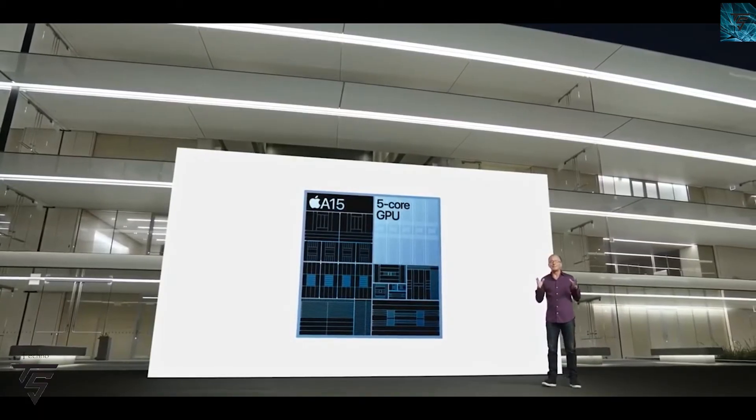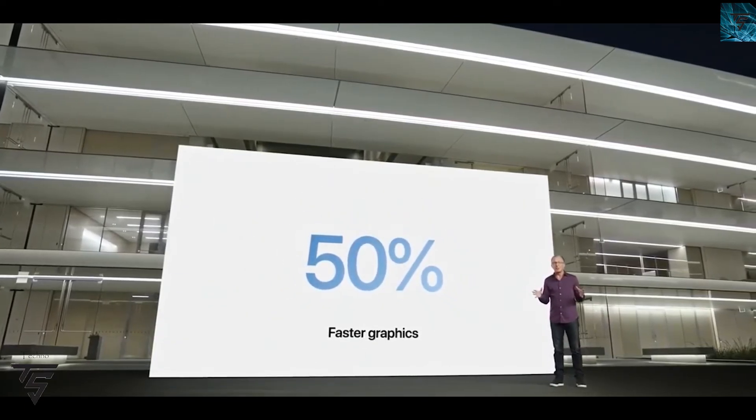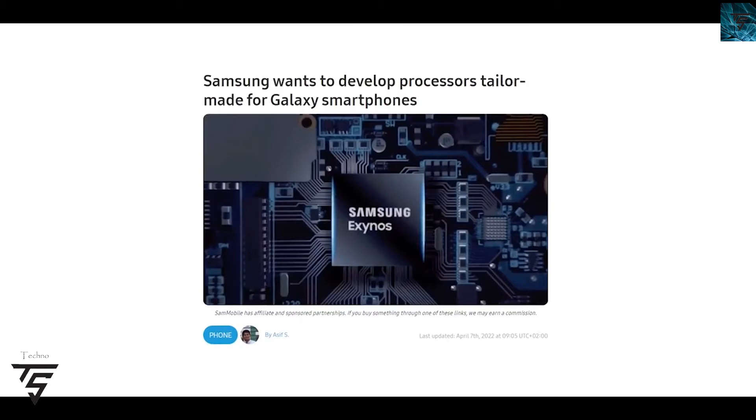On top of that, Samsung is going to work with ARM to develop their own in-house ASICs only for Samsung Exynos smartphones. It's not going to be Snapdragon, it's going to be a completely different, tailor-made Exynos smartphone processor which might come next year in the S23.